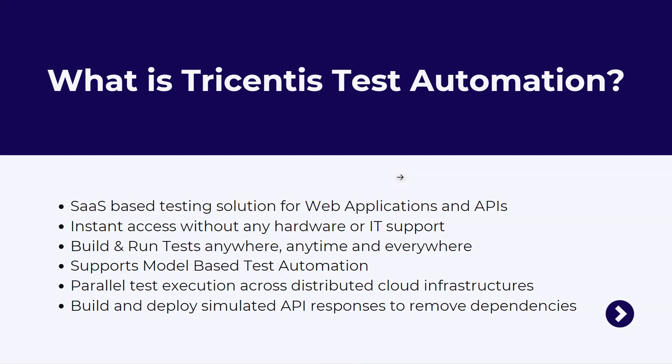SaaS stands for Software as a Service, which is a cloud-based model where you can access applications over the internet using a particular licensing and service model. You only pay for the subscription as you use the application, so the costs are lower and you don't need to worry about infrastructure or setup — the company takes care of that and provides the software as a service to you.